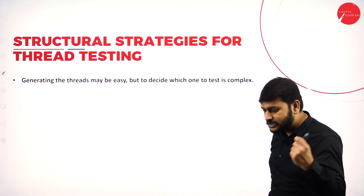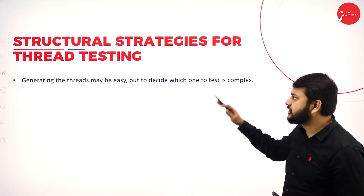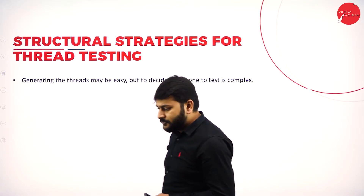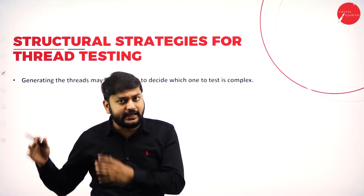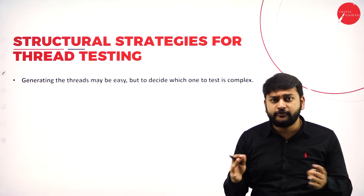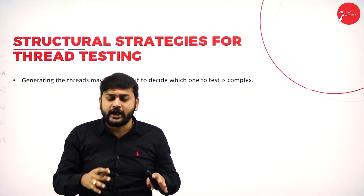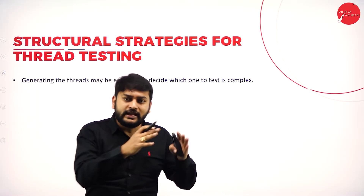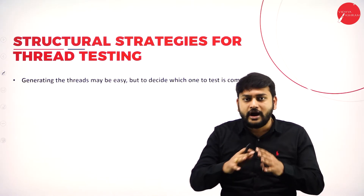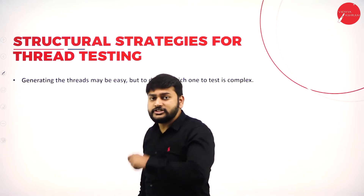We were discussing about the structural strategy. What exactly is the structural strategy? Observe the structural strategy for thread testing. In the last session we discussed in detail about how do I find the threat. Finding a threat was a difficult task and we were using the finite state machine to find a threat. We had an example like pin entry and discussed that in detail with respect to the different levels of decomposition of the finite state machine. We got multiple threats. But finding a threat is not a challenge — finding the right threat is a challenge.